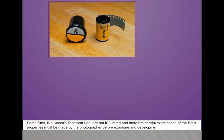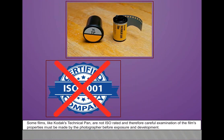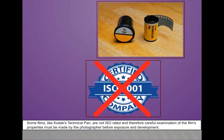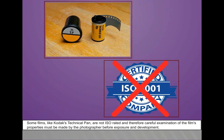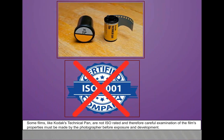Some films like Kodak Technical Pan are not ISO rated, and therefore careful examination of the film's properties must be made by the photographer before exposure and development.